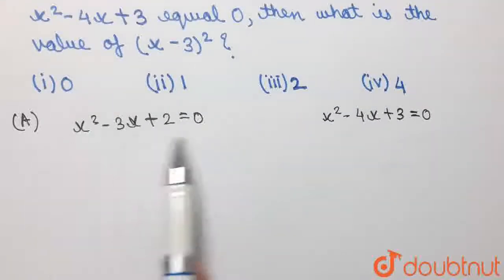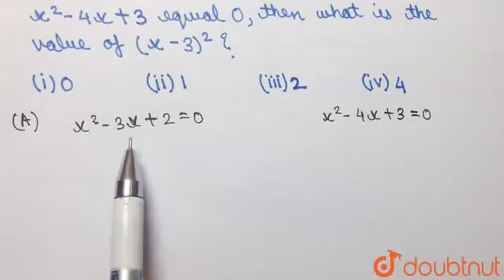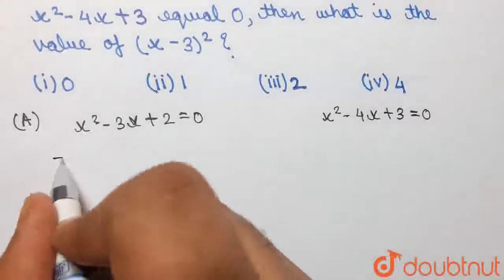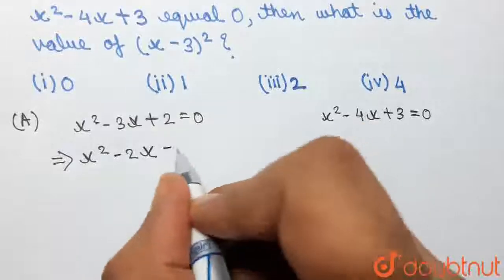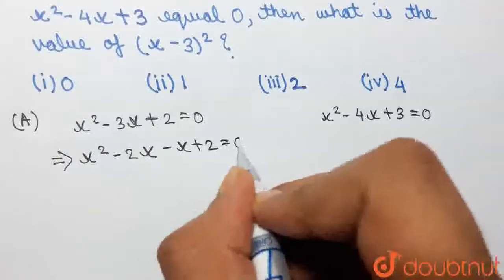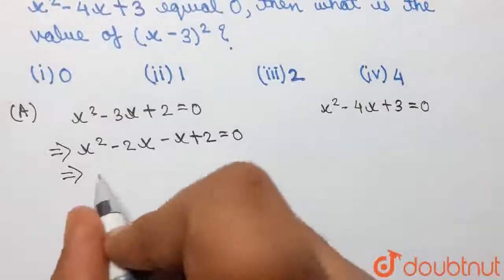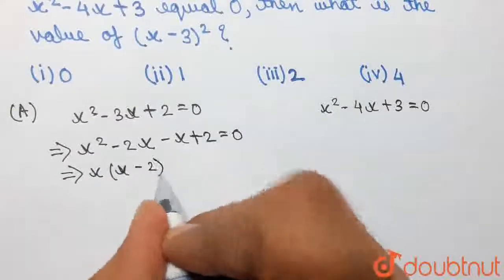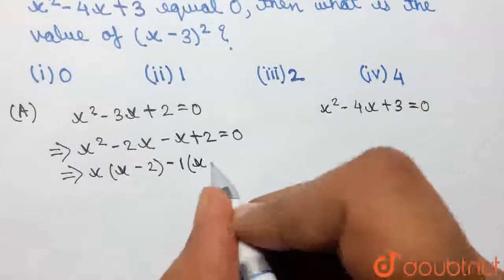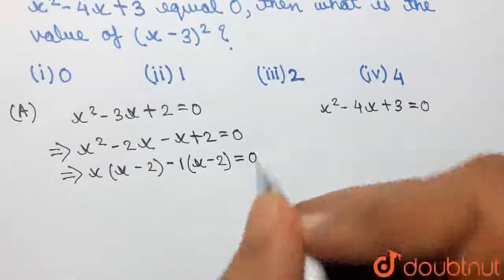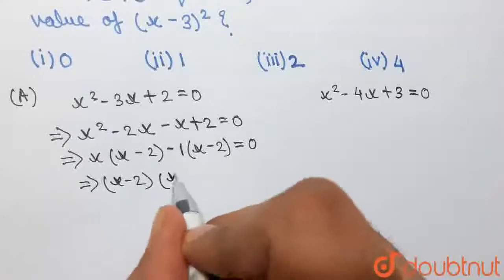Considering the first equation, x²-3x+2=0, we can observe that this is a quadratic equation which can simply be solved by factorization. Factorizing the left-hand side, we write x²-2x-x+2=0, because -3x can be written as -2x-x. Taking x common from the first two terms, we have x(x-2), and taking -1 common from the next two terms, we have -1(x-2), equal to 0.